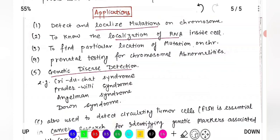FISH is also used for prenatal testing for chromosomal abnormalities — detecting chromosomal abnormalities in a developing fetus. It enables pre-implantation genetic diagnosis, where genetic abnormalities in an embryo can be detected before implantation during IVF (in vitro fertilization). It also detects genetic diseases like Cri-du-chat syndrome and Angelman syndrome.